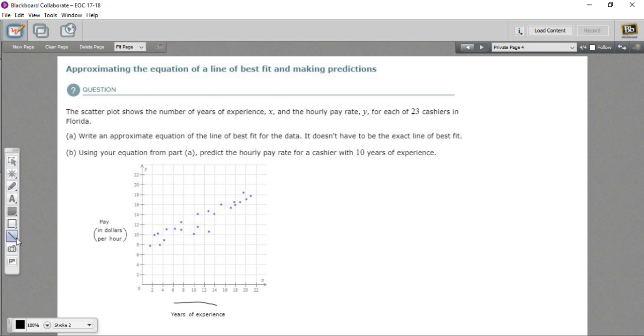So if I were to draw in a line sort of in the middle of all that, it might look something like this. We would call this a line of best fit. It's just an approximation, but it's a line that shows the general shape of these points.